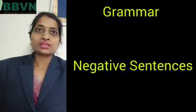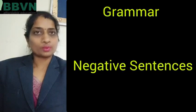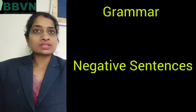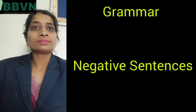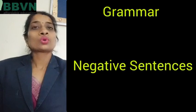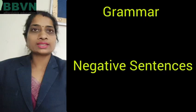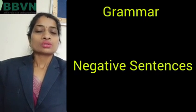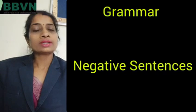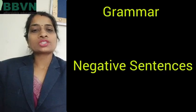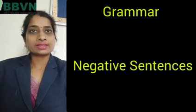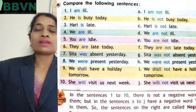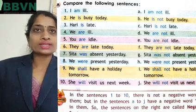Sentences are either positive or negative. Negative sentences kaun se hote hain? Jin sentences mein hum 'not,' 'no,' 'never' use karte hain — ye sentences negative sentences hote hain. So first of all you have to open page number 83. On page number 83 there are some sentences — some examples given — there are 10 sentences positive and negative. So we are going to read them out.